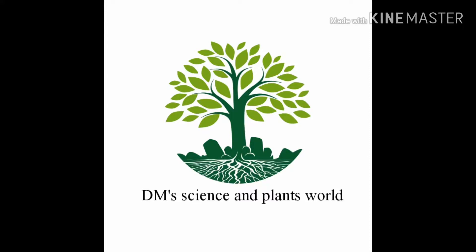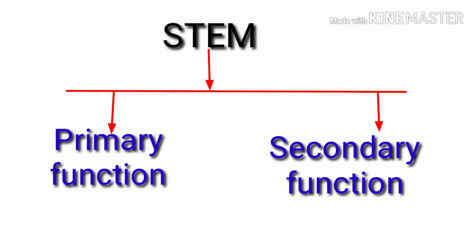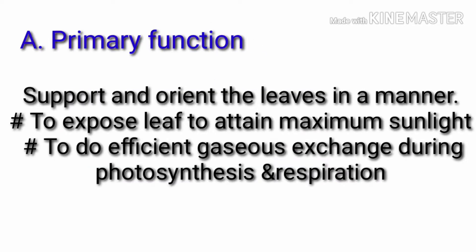This presentation is about the functions of the stem. The stem carries out two kinds of functions: primary functions and secondary functions. The primary function is that the stem supports and orients the leaf in a particular manner, helping to expose the leaf area maximally towards sunlight so that the leaf can perform photosynthesis effectively.